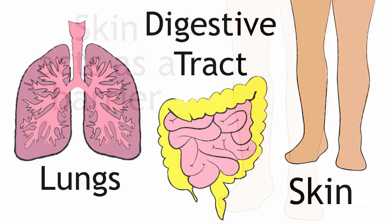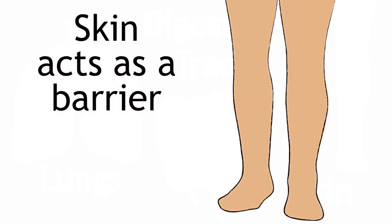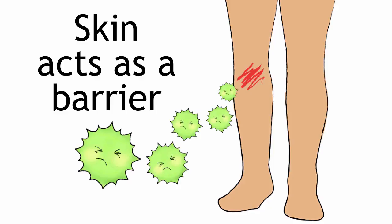Normally, the skin acts as a barrier to prevent pathogens from entering the body. Let's say, for example, you scrape your leg. The barrier — your skin — is now compromised, and pathogens such as bacteria, which are present on your skin or in the environment, are now able to enter your cut.